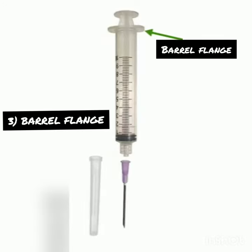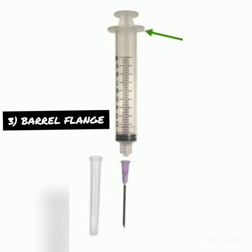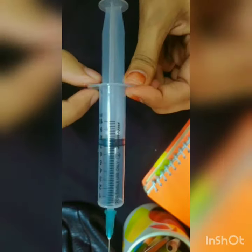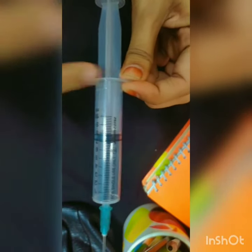Barrel flange: it is located on the barrel of the syringe. The syringe is supported here, usually by a couple of fingers.